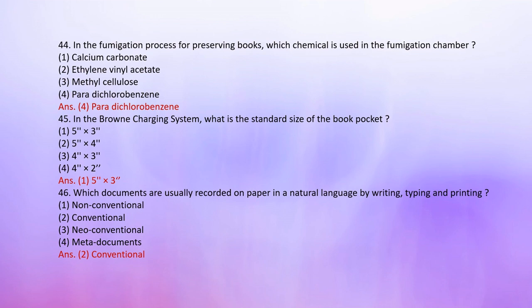Number 46: Which documents are usually recorded on paper in natural language by writing, typing, and printing? Options: 1. Non-conventional, 2. Conventional, 3. Neoconventional, 4. Meta documents. The correct answer is 2: Conventional.